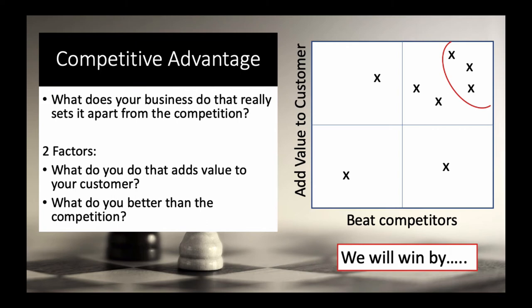There's no point doing something that adds value if competitors do it way better — that's their competitive advantage, not yours. If you plotted each component of potential competitive advantage on a graph — scored from zero to ten on adding value to the customer and on beating competitors — you'd end up with a distribution. Some things would be high value-add, and a small proportion would be things you also do much better than the competition. That's your sweet spot.